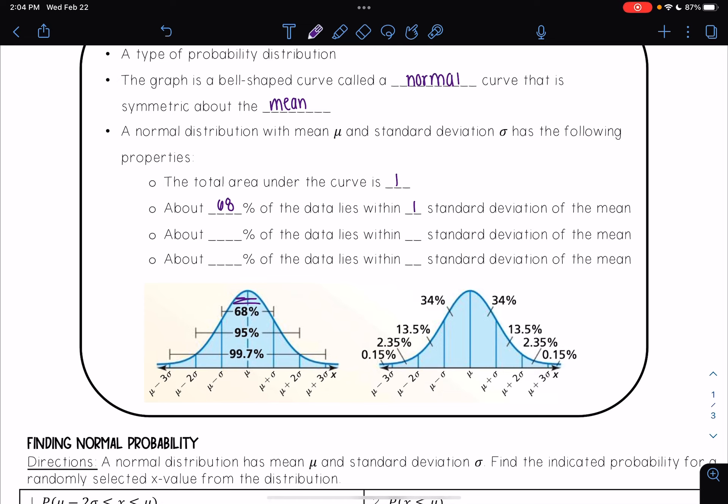So about 68% of the data lies within one standard deviation. 95% of the data lies within two standard deviations of the mean. And about 99.7% of the data lies within three standard deviations of the mean. And so we see that summarized in this first graphic.